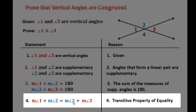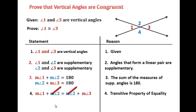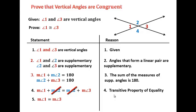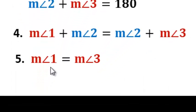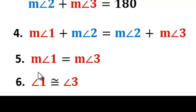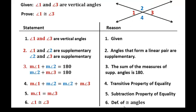Now I have on this side of the equal sign the measure of angle two, and on this side another measure of angle two. If you have the same thing on both sides, we can just subtract those out. Subtracting, I would be left with: the measure of angle one equals the measure of angle three — and that was the subtraction property of equality. I need to look back — I'm trying to prove that angle one is congruent to angle three, but right now I have 'measure' in front, meaning I'm talking about numbers. I need to change it to show they have the same size and shape, and that would be the definition of congruent angles.